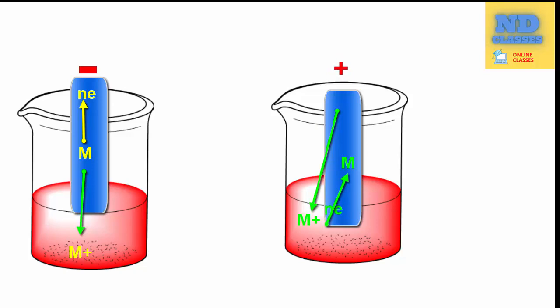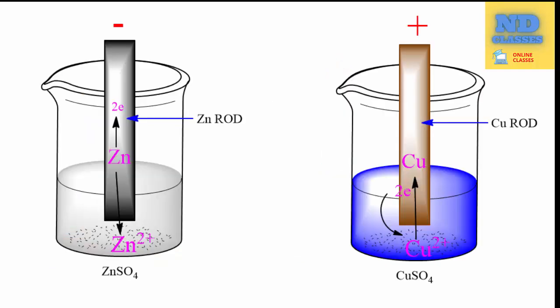For example, when a zinc rod is immersed in a solution of zinc sulfate, it acquires negative charge. And when a copper rod is dipped in a solution of copper sulfate, it acquires positive charge.